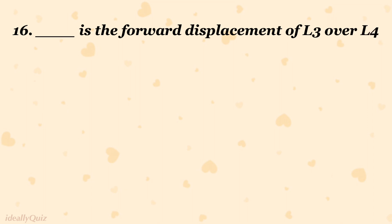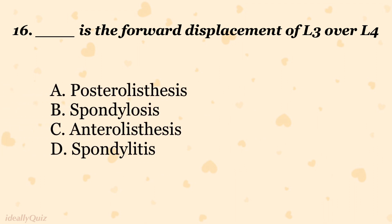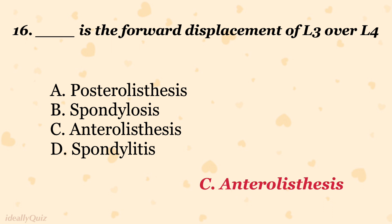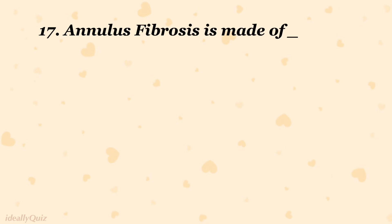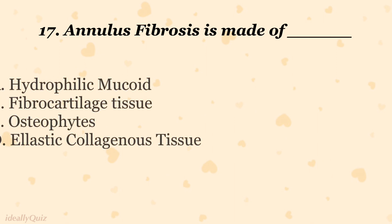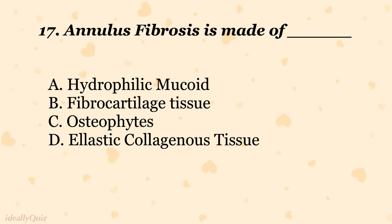The forward displacement of L3 over L4 is called: A) posterior listhesis, B) spondylosis, C) anterior listhesis, D) spondylitis. The correct answer is C) anterior listhesis. The annulus fibrosis is made of: A) hydrophilic mucoid, B) fibrocartilage tissue, C) osteophytes, D) elastic collagenous tissue.